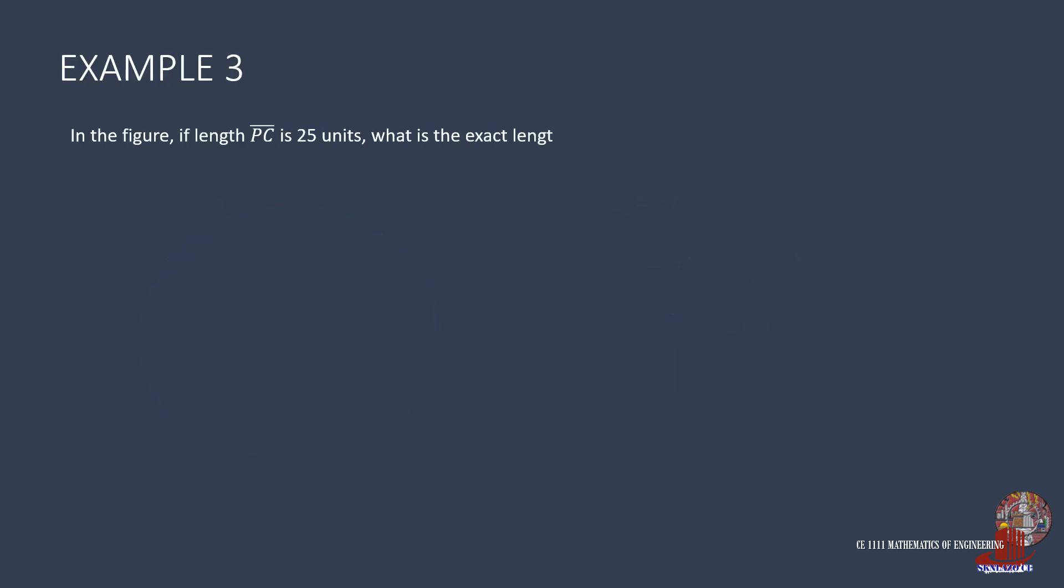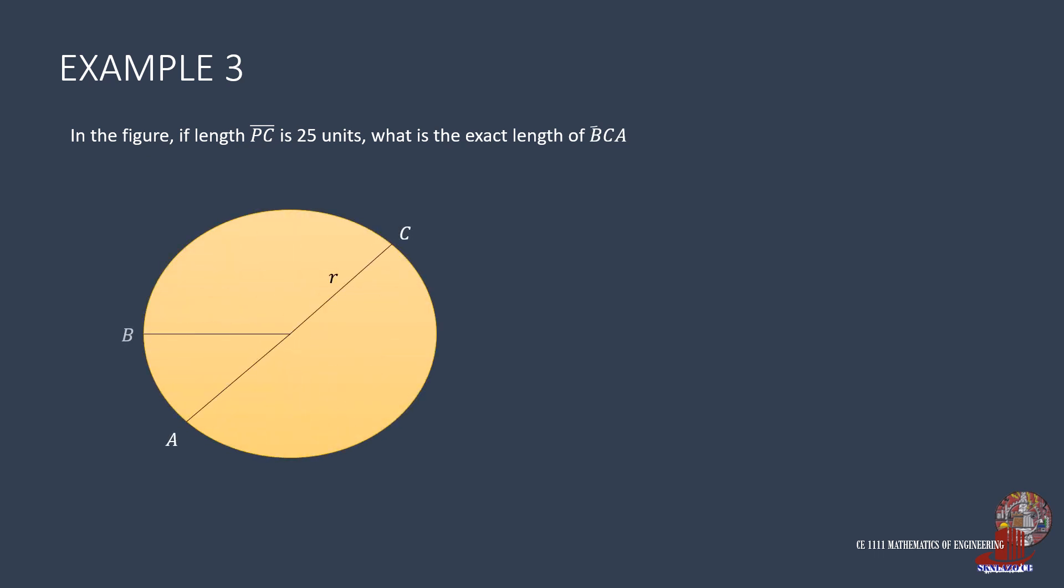For the next example, a figure is provided where length PC is 25 units. Length PC is the radius of circle P. Also given in the figure is theta, which is 3/10 π. We are to determine the length of arc BCA, that is the major arc. Using the equation s equals r theta, there are two approaches, one of which is to take r as 25 and theta of arc BCA directly. This is measured as the full revolution of 2π minus the slice of 3/10 π, which is computed as 17/10 π. Plug this into the general equation, giving s as 25 times 17/10 π, resulting in 85/2 π or 133.52 units.